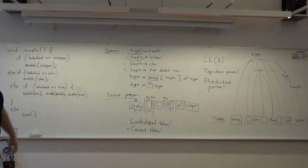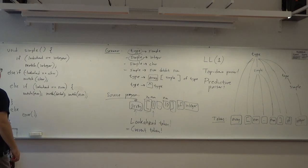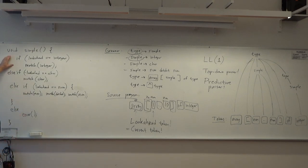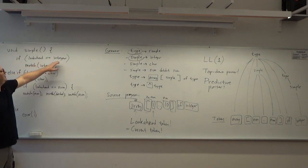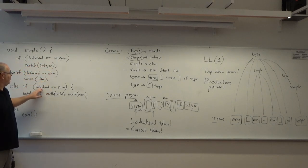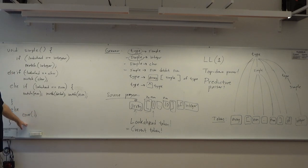The function 'simple' is a predictive parser — it always knows which rule is the right one. The input either starts with integer, char, or a number, or it's something else which is an error. Note this is not exactly valid C code — 'char' is a keyword in C, so it would fail through a real C compiler.